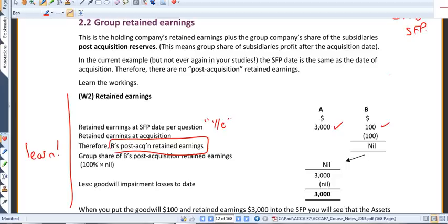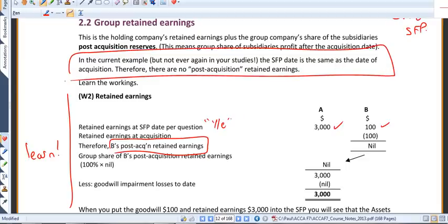Now, in this example, but never again in your studies, the year-end is actually the same as the date of acquisition. And so here, the year-end reserves of B are 100, and the reserves at the date of acquisition are 100.